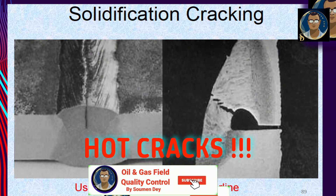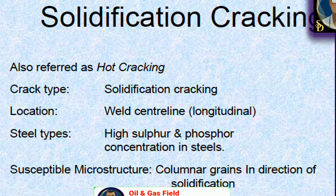Hot cracks, depending on location and mode of occurrence, can be solidification cracks or liquation cracks. Solidification cracks occur in the weld metal, usually along the centerline of the weld, as a result of the solidification process. Liquation cracks occur in the coarse grain heat affected zone, or in the near vicinity of the fusion line, as a result of heating the material to a temperature high enough to produce liquation of low melting point constituents present on grain boundaries.